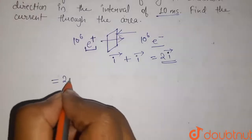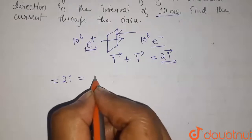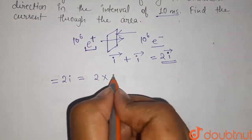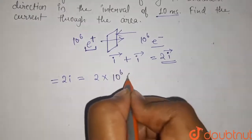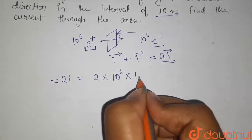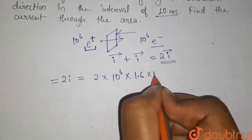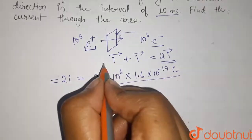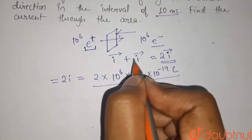The total current 2i will be given by 2 times the value of i, which equals 10^6 times the charge on a positron or electron. So it is 1.6 × 10^-19 coulombs divided by the time taken by these charges to flow.